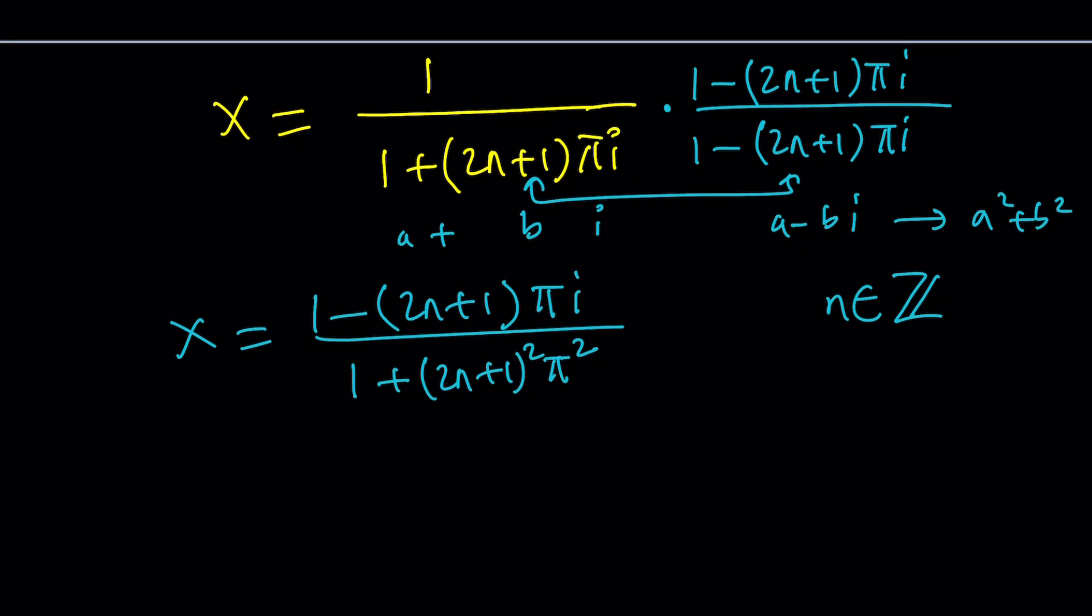So we're going to look at this general solution. This is the general solution. n is an integer. But let's also go ahead and look at some particular values because I'm going to give you approximate values for this one.